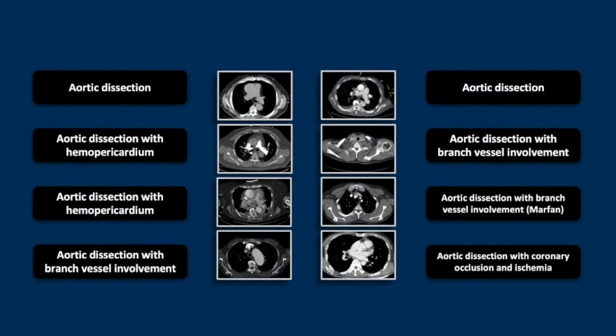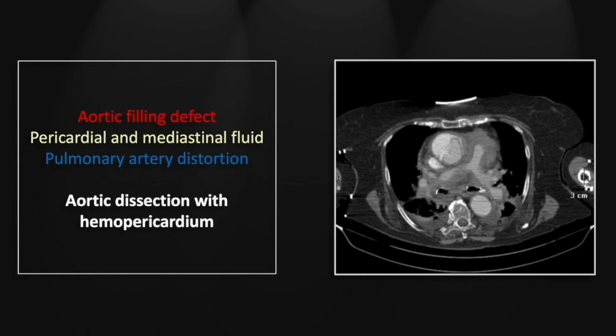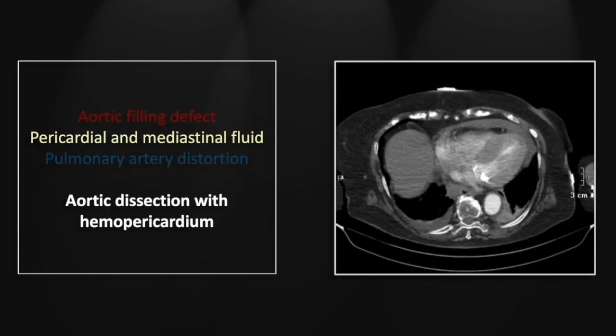Our next case is another aortic dissection with hemopericardium, this one with significant associated mediastinal hemorrhage. You see the dissection flap and aortic medial contrast. There is significant mediastinal hemorrhage which in this case is causing significant distortion and even narrowing of the right pulmonary artery. And here again is evidence of retrograde dissection and hemopericardium — another isodense pericardial fluid collection.